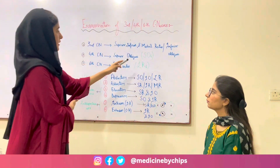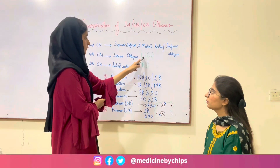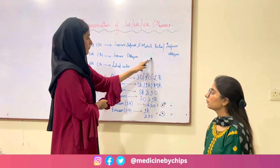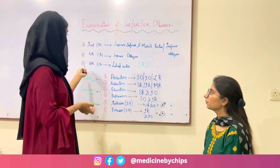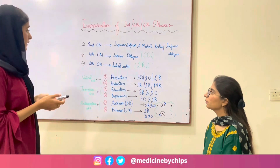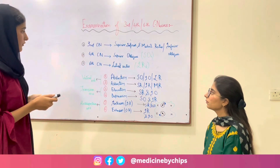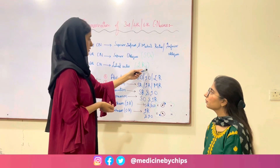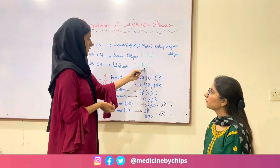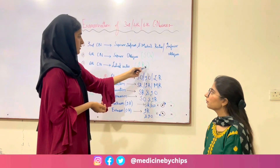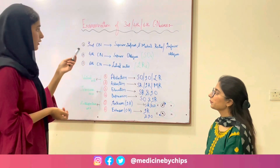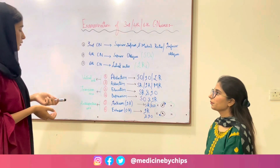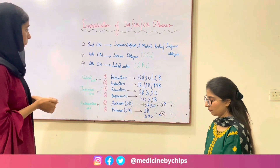The mnemonic to remember this is SO4 — SO4 means superior oblique supplied by the 4th cranial nerve. The 6th cranial nerve supplies the lateral rectus, and the mnemonic to remember this is LR6 — lateral rectus supplied by the 6th cranial nerve. All the remaining muscles are supplied by the 3rd cranial nerve.